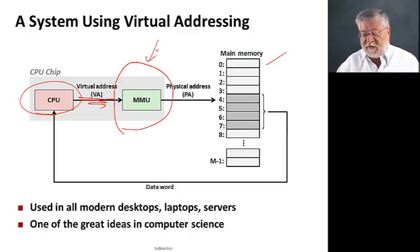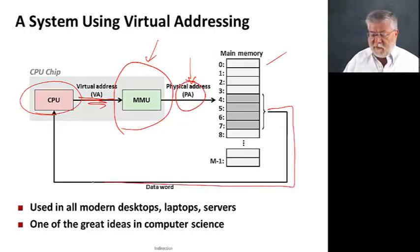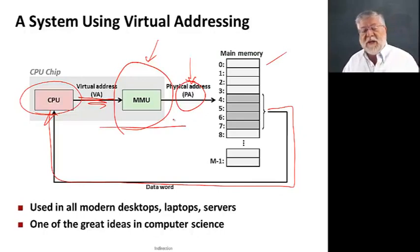All those sorts of things will be done inside of this memory management unit which will then generate a physical address that will be used to actually access the physical memory. And again, just get that data and bring it around back into the CPU as before. But that mapping function in between is that level of indirection. And that is one of those great ideas in computer science that is used to solve many, many problems. And in the next few videos, we'll go into the details of how this is implemented for virtual memory.